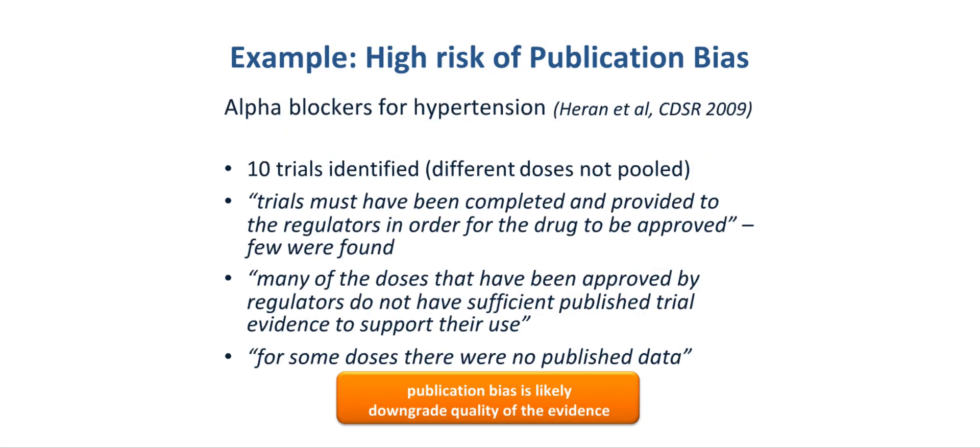An example comes from a Cochrane systematic review looking at alpha blockers for hypertension. In this systematic review, 10 trials were identified. Although the results were not pooled because of the use of different doses in these various trials, the authors concluded that trials must have been completed and provided to the regulators in order for the drug to be approved. Only very few trials were actually found. Many of the doses that have been approved by regulators do not have sufficient published trial evidence to support their use. And for some doses, there were no published data. The authors of this review concluded that publication bias may be likely, and one might downgrade the quality of the evidence.